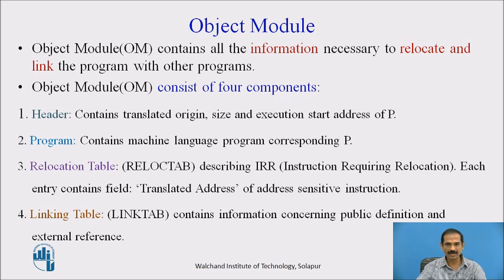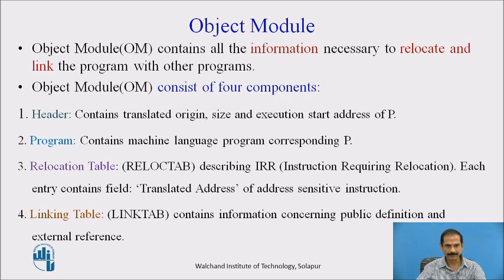The object module consists of four components: a header that contains translated origin, size, and execution start address of a program P; a program containing a machine language program corresponding to program P; a relocation table (reloc_tab) describing the instructions requiring relocation, each entry containing the translated address of the address-sensitive instruction; and a linking table (link_tab) containing information concerning public definitions and external references.